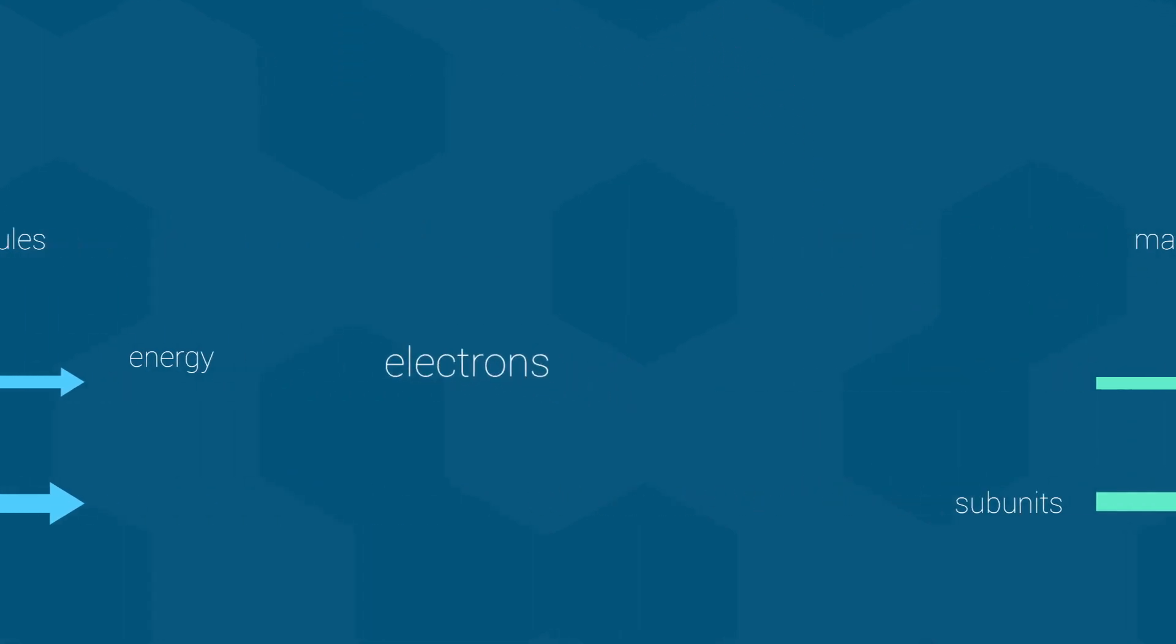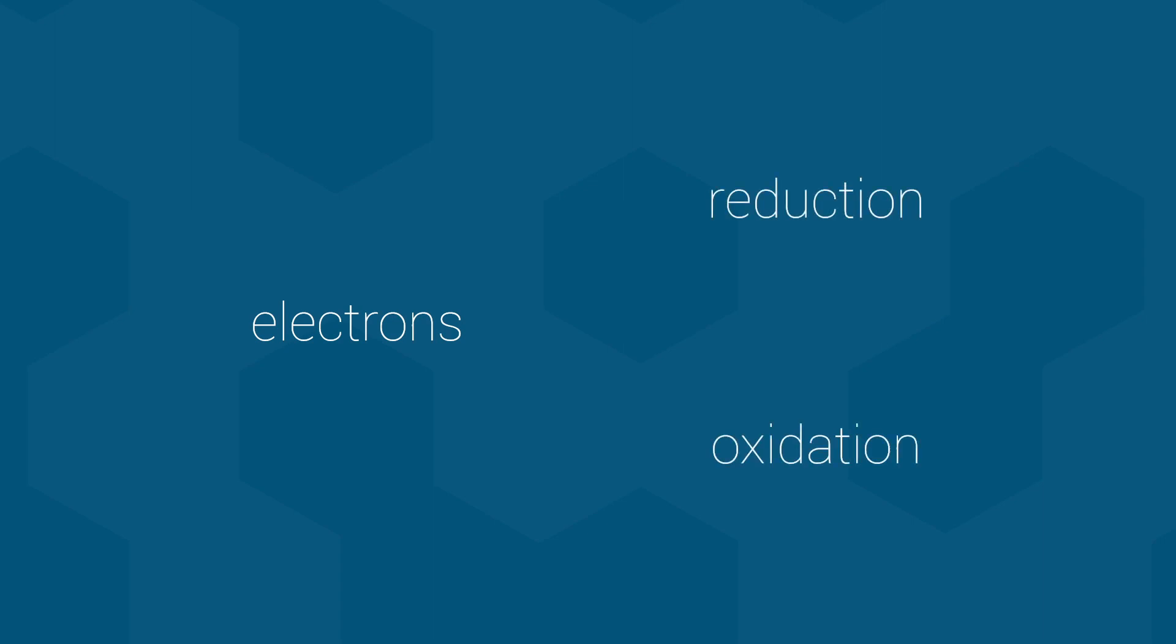Let's now return to the electrons for a moment since I mentioned them as being important. Metabolism is a long series of chemical reactions occurring inside organisms. Since we are also dealing with the transfer of electrons, we must therefore be dealing with reactions that involve reduction and oxidation. In other words, metabolism is very much about redox reactions.